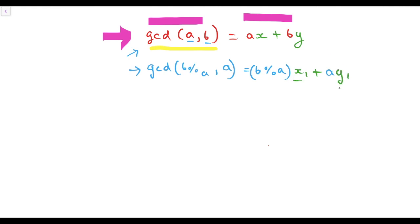Here this x1 and y1 is different from this x and this y. As we know that B modulo A can be written as B minus floor of B divided by A times A.